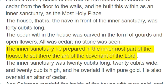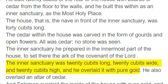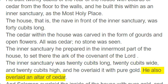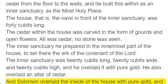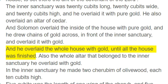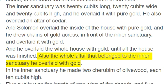The inner sanctuary he prepared in the innermost part of the house, to set there the Ark of the Covenant of the Lord. The inner sanctuary was 20 cubits long, 20 cubits wide, and 20 cubits high, and he overlaid it with pure gold. He also overlaid an altar of cedar. And Solomon overlaid the inside of the house with pure gold, and he drew chains of gold across, in front of the inner sanctuary, and overlaid it with gold. And he overlaid the whole house with gold, until all the house was finished. Also the whole altar that belonged to the inner sanctuary he overlaid with gold.